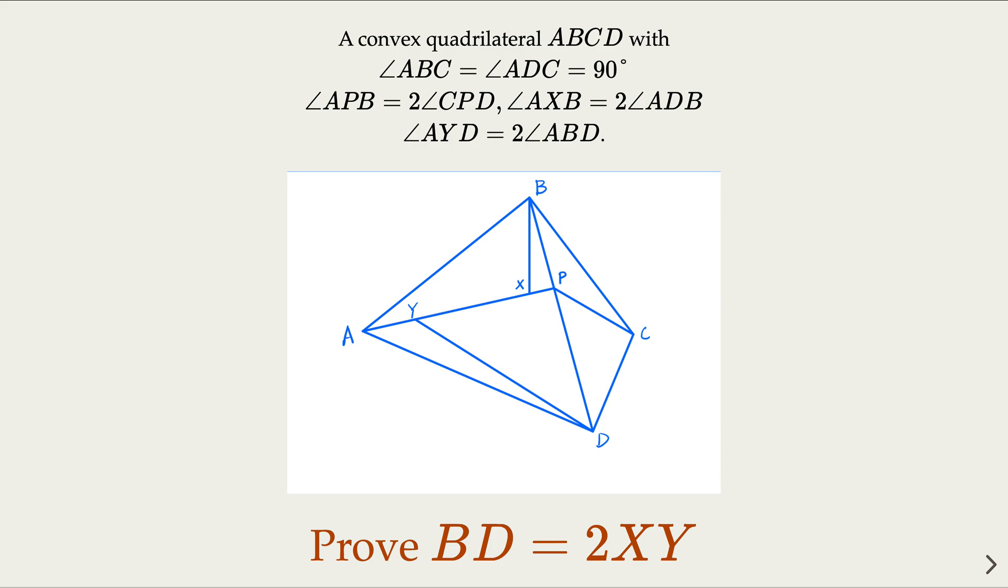This problem is from 2022 China's Math Olympiad. It is a geometry problem. A convex quadrilateral ABCD is drawn with the property that angle ABC equals angle ADC equals 90 degrees. We try to prove BD equal to 2XY.